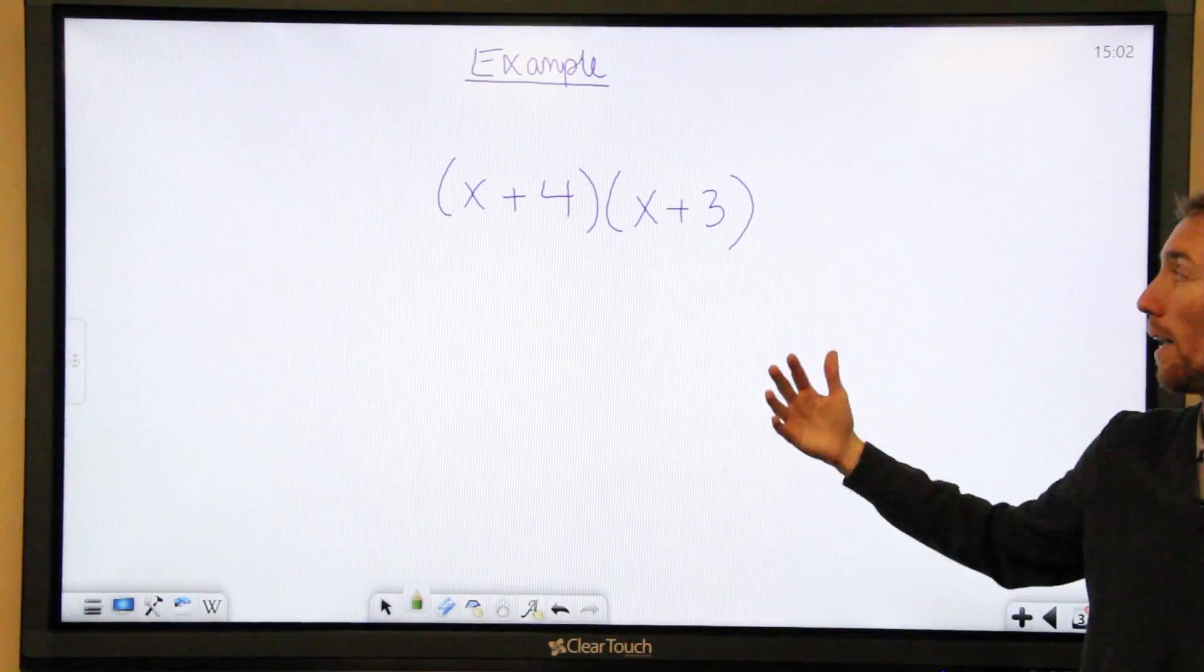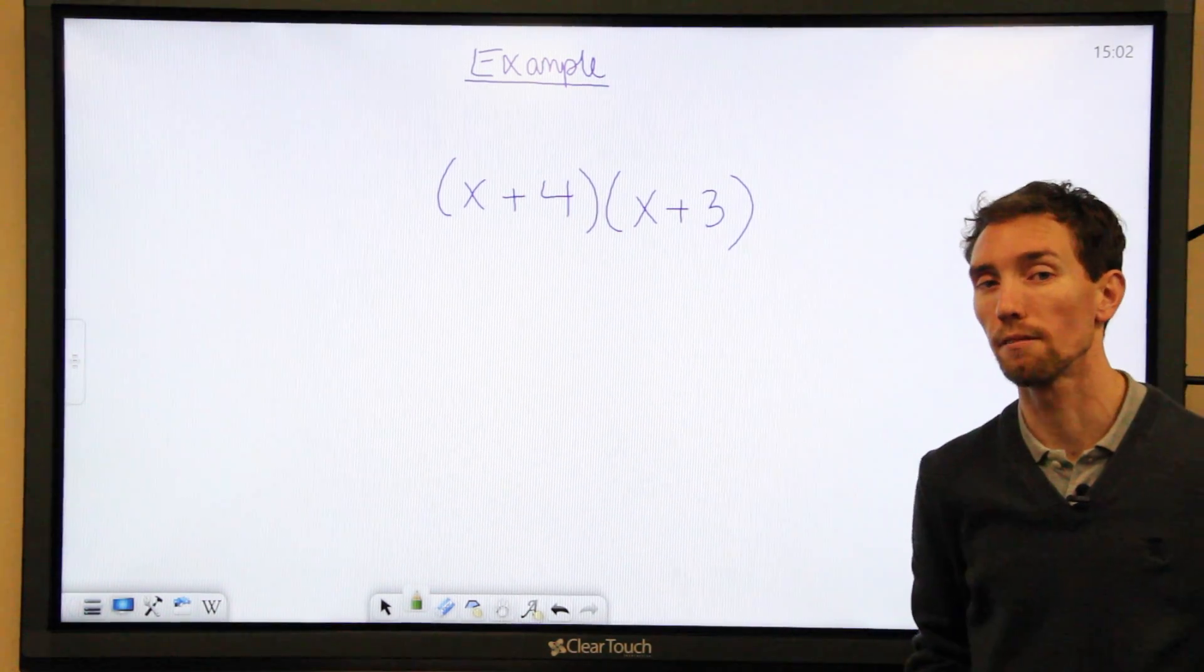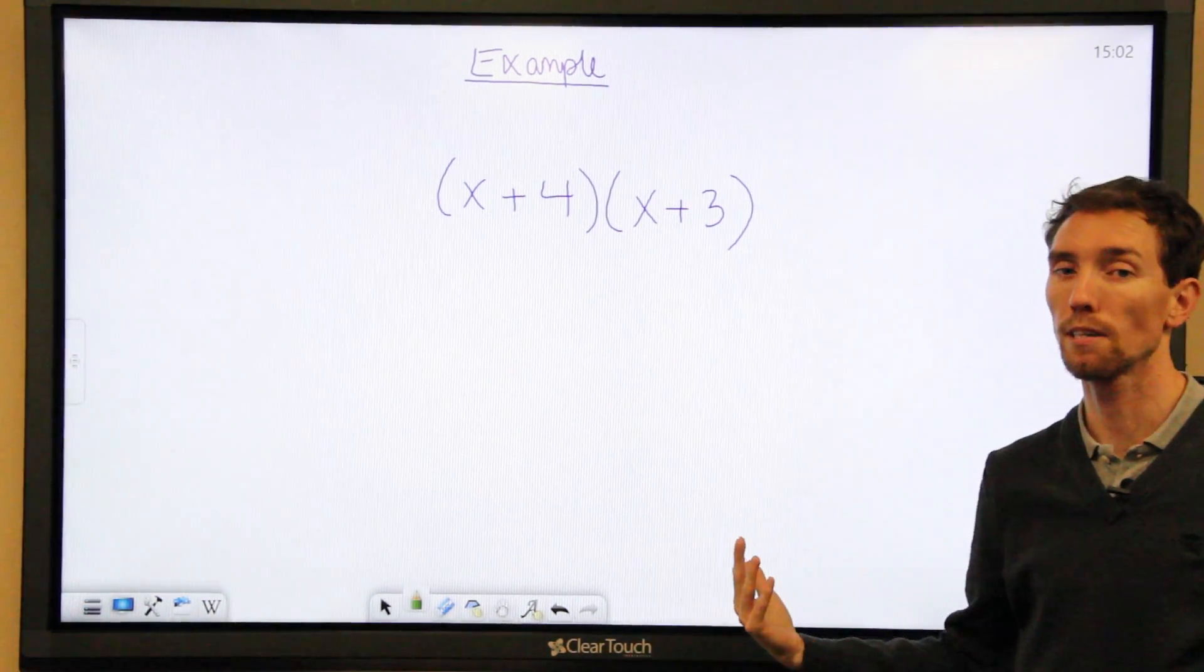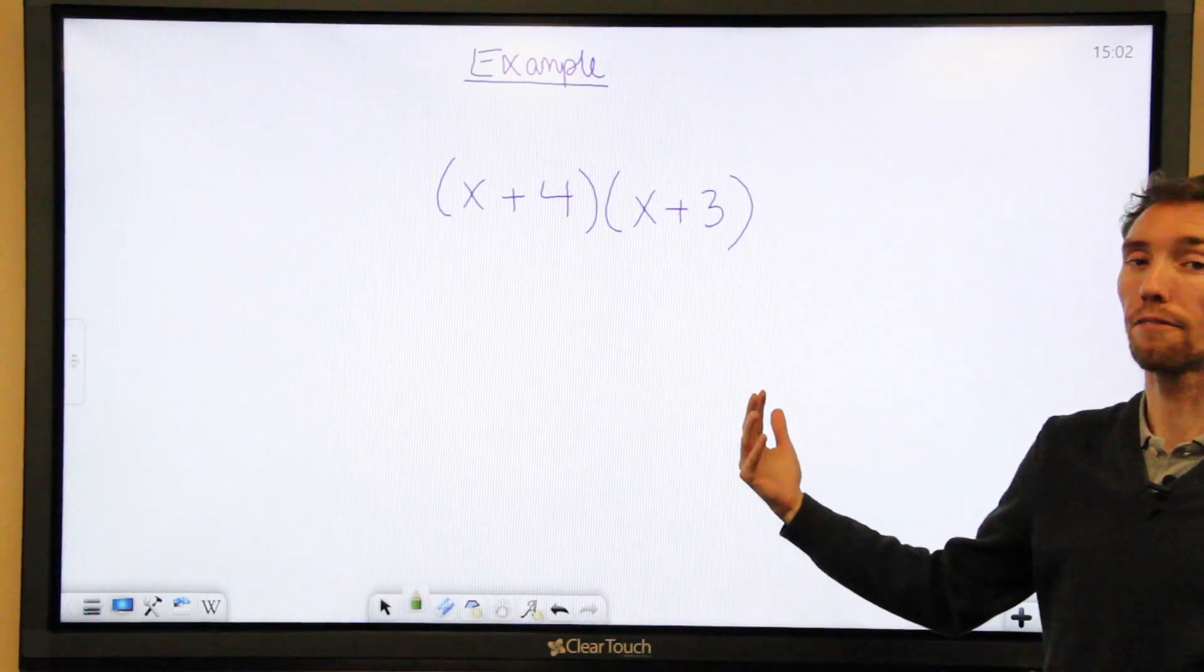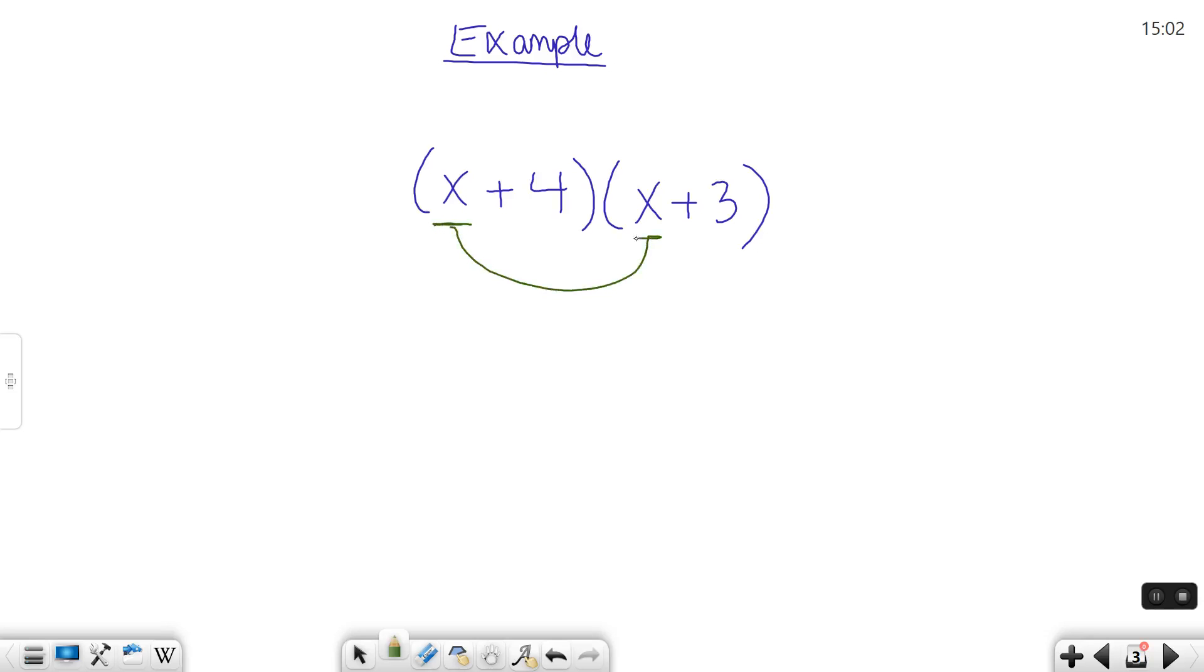So say you're given an example x plus 4 times x plus 3, and you're asked to simplify this expression. Well, you can do that using the FOIL method. So let's look at the first terms. First terms are x and x. x times x is x squared.